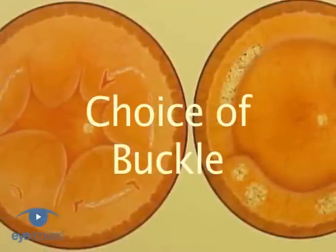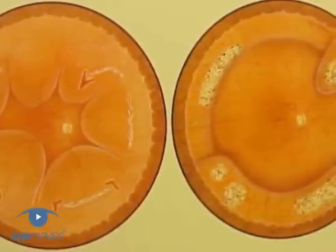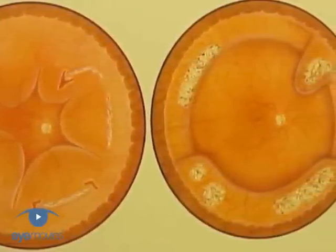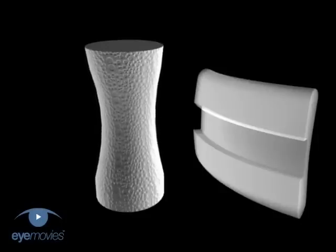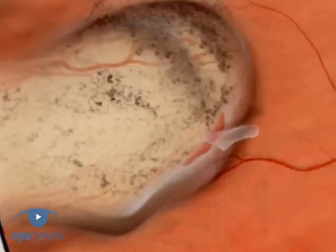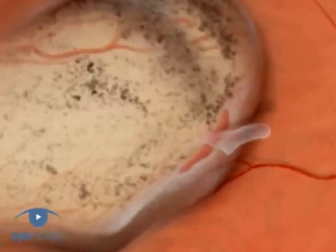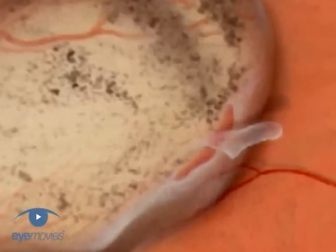The scleral buckle should be chosen to give a sufficient indent under all the retinal breaks. The choice of buckle will therefore depend on the size and location of the breaks and the amount of subretinal fluid. Sponges are more easily compressed, so they can expand after the sutures are tightened. This can give rise to very high indents to close quite elevated breaks without subretinal fluid drainage. The cross-sectional profile of the resulting indent is relatively narrow at its apex, however, so correct positioning is essential to avoid failure.